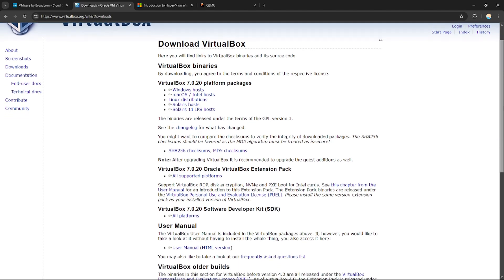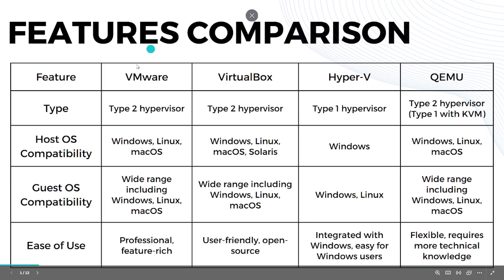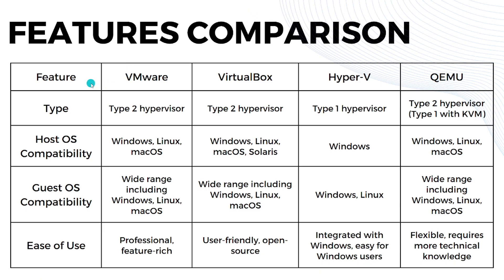Now let's go directly to the features comparison. When it comes to type of hypervisor: VMware uses a Type 2 hypervisor, VirtualBox also uses a Type 2 hypervisor, QEMU uses Type 2 with KVM providing Type 1 capability, while Hyper-V only uses a Type 1 hypervisor.